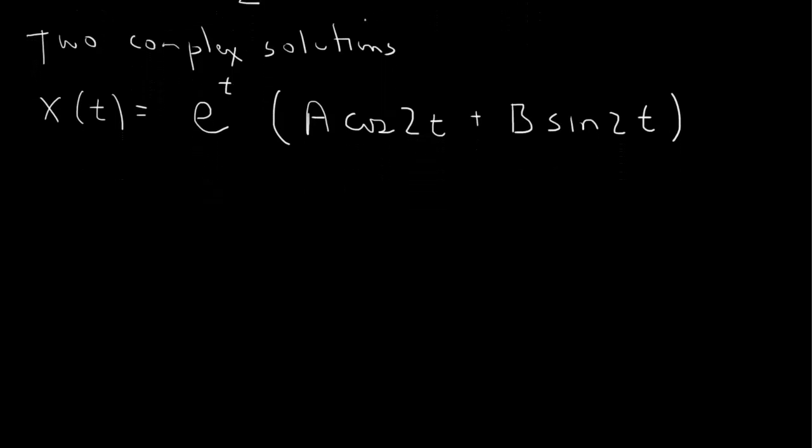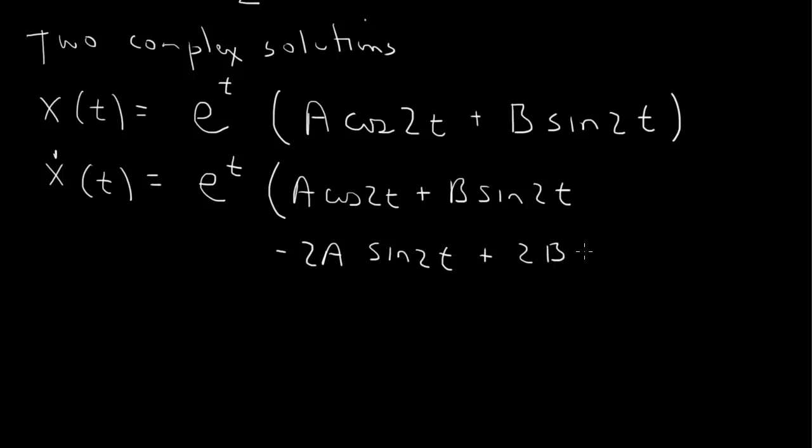So we need the x and then we need its derivative to satisfy the initial condition. So the time derivative here, we'll get an e to the t again. And then it's the derivative of the first times the second, which will just give us a cosine 2t plus b sine 2t, plus the first, e to the t, times the derivative of the second. So the derivative here will give us minus 2a sine 2t plus 2b cosine 2t.